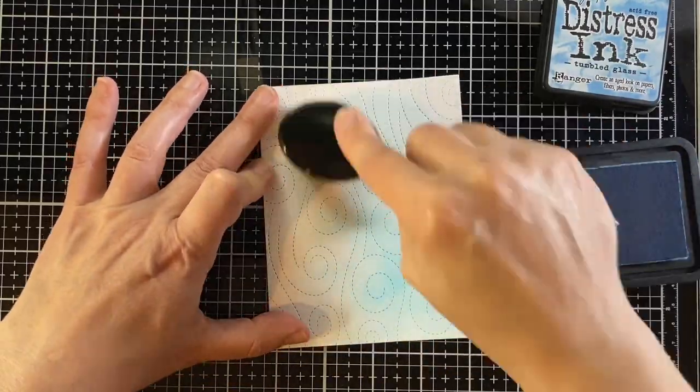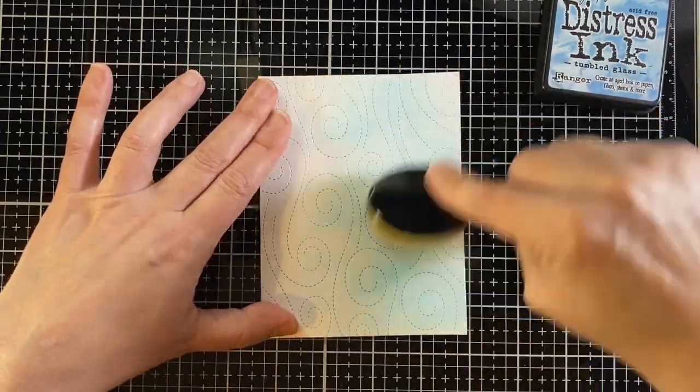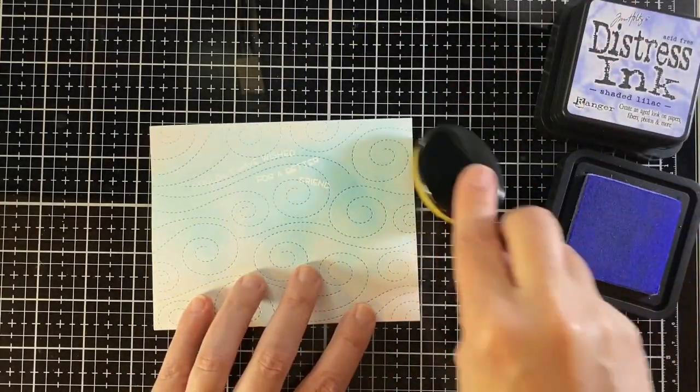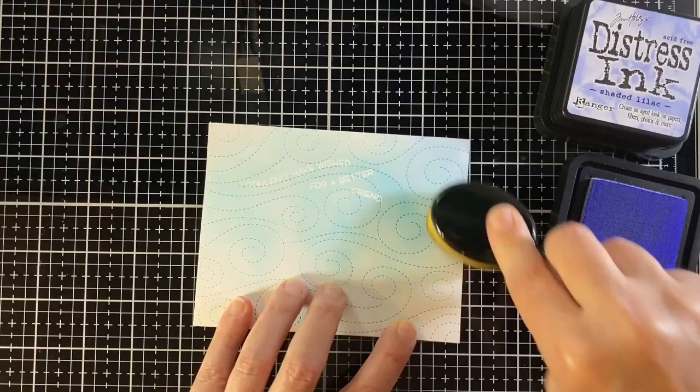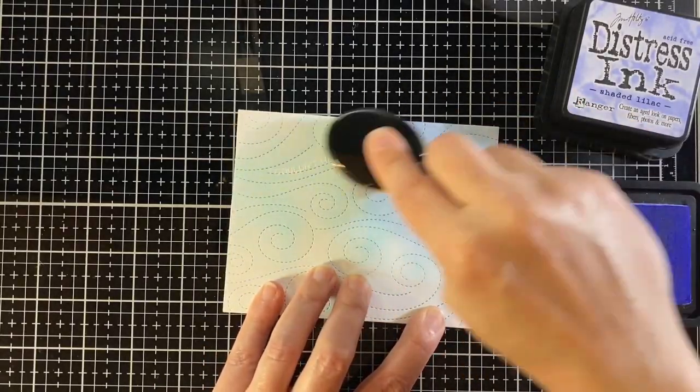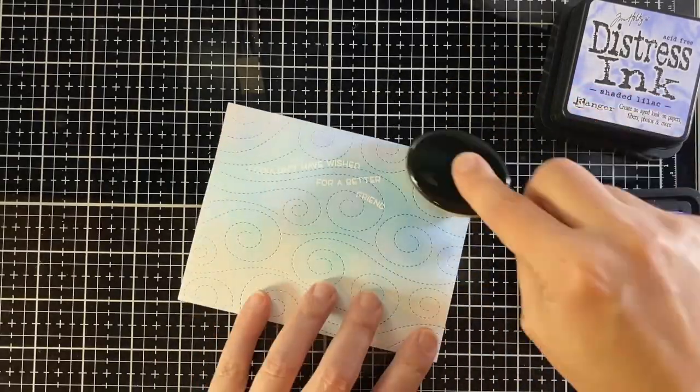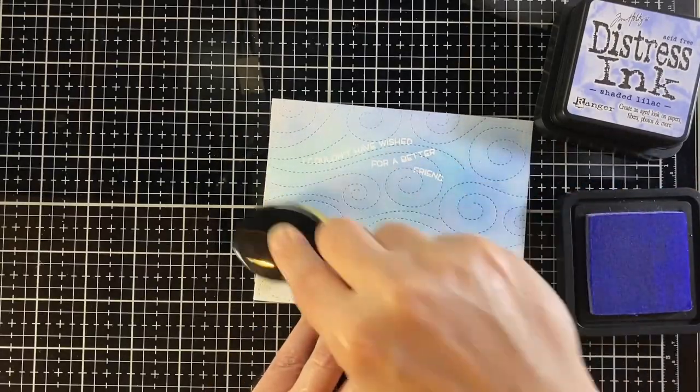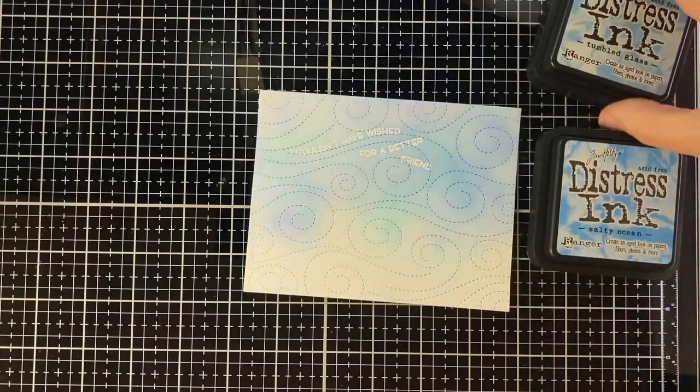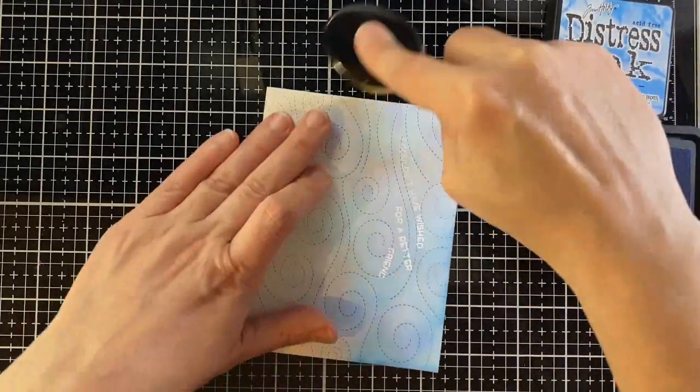I also want this to be a little bit purple so this is shaded lilac, also just regular distress ink. I'm using a life-changing blender brush and I'm kind of putting the purple in circles kind of like the wispy wind is looking in there just to give it a two-toned look.